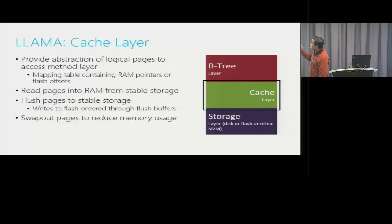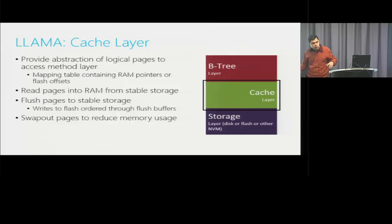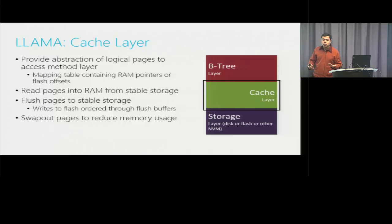The cache layer is responsible for moving pages back and forth between memory and storage: reading pages into RAM and flushing them to stable storage via flush buffers. It also does page swap-out. BW-tree operates on a configurable memory budget, and to adhere to that budget, pages are swapped out to storage. Page swap-out does not run in the background; it runs in the foreground parallelized across accessor threads. As more threads hit BW-tree, swap-out work naturally scales because it is divided among them.